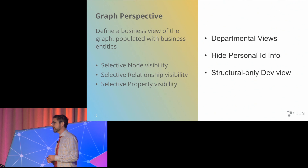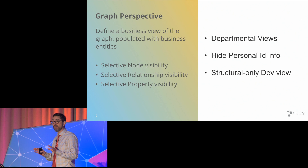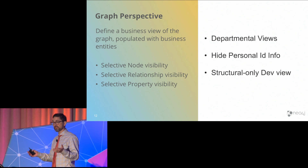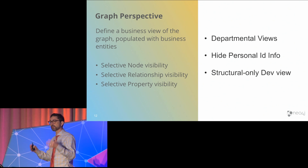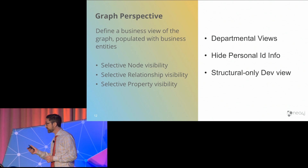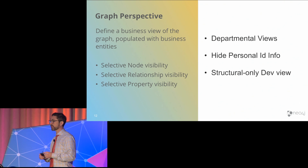If you want to give your developers a purely structural view — sensitive to personal data — you could obscure all data from them so they have a view that sees only the nodes and relationships but none of the content: a purely structural view of the graph. All this is possible by having this abstraction on top of the property graph model, which we're calling a perspective view.